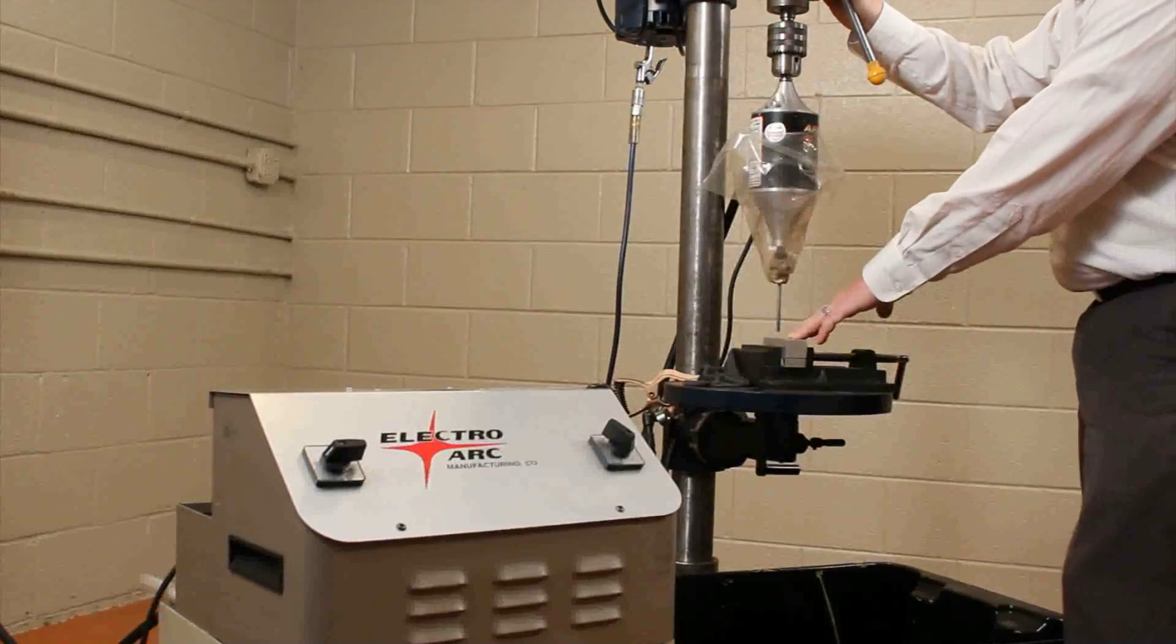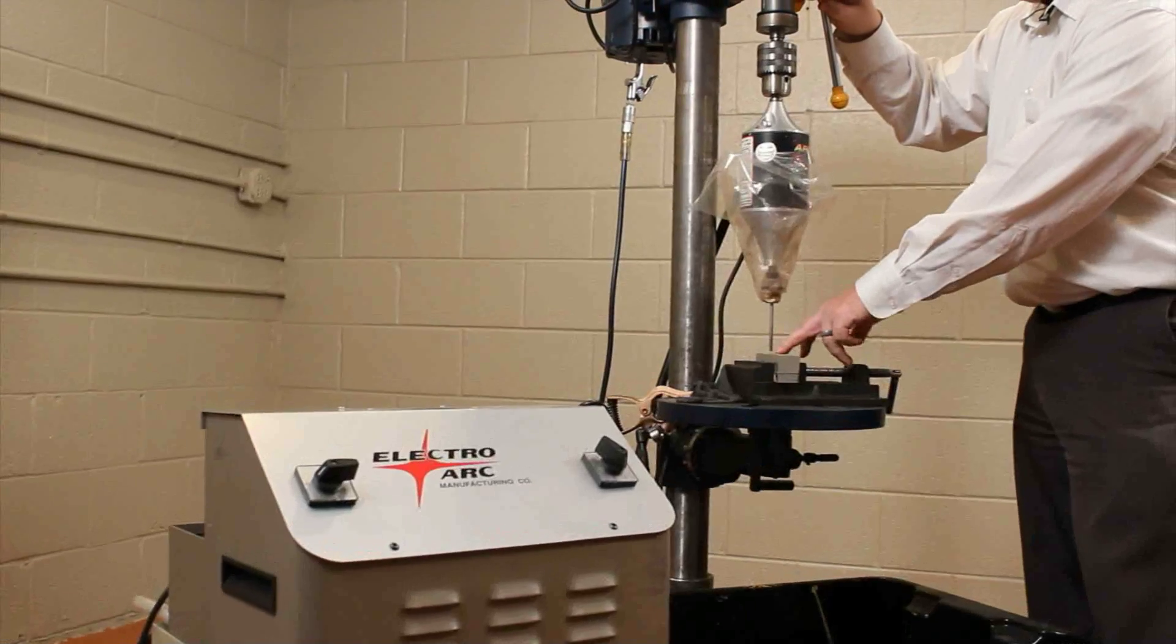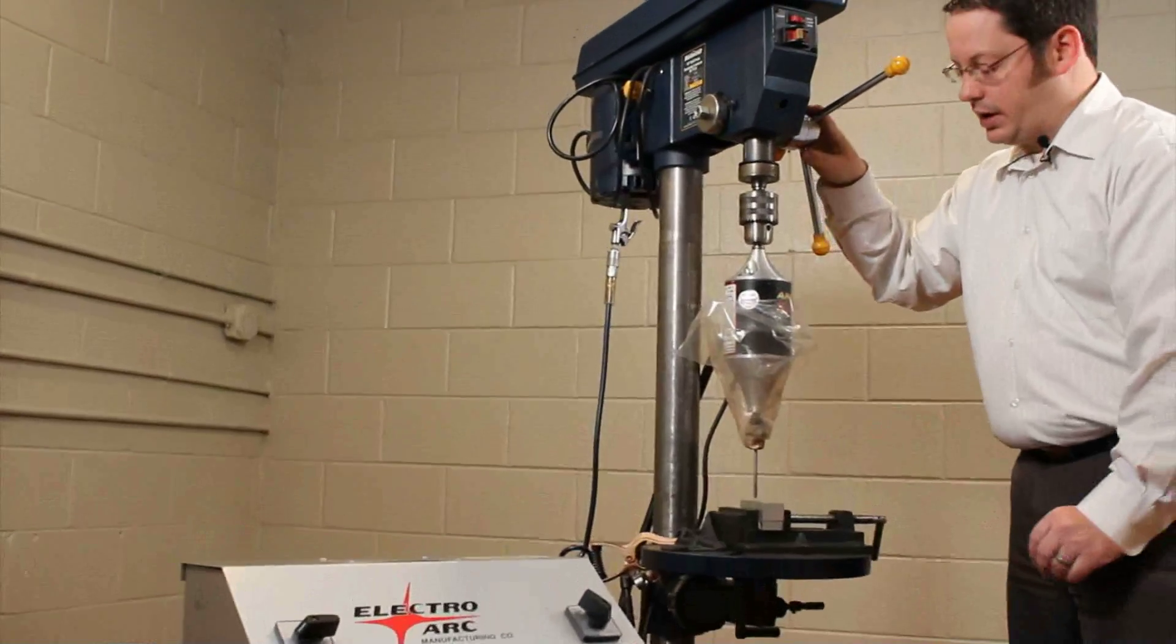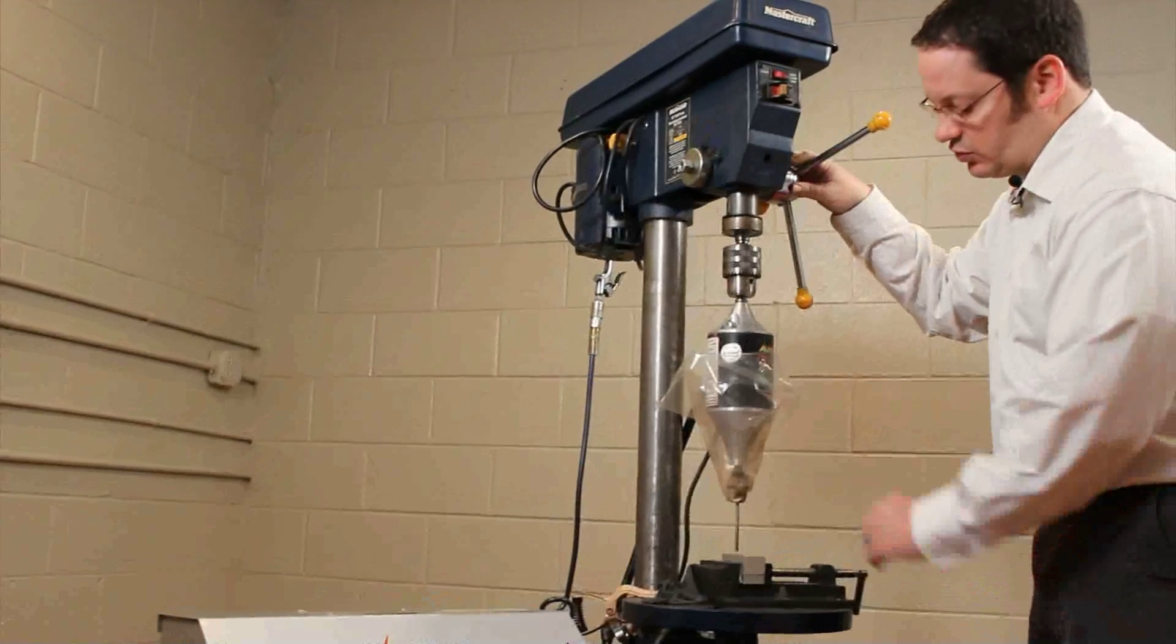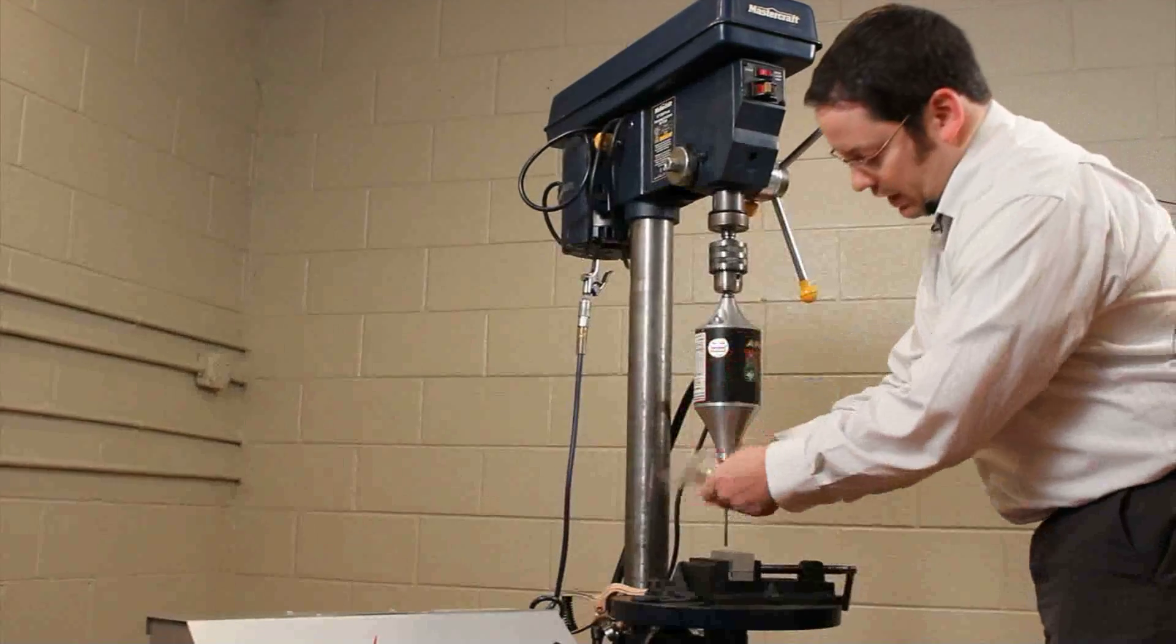As far as our alignment, all you want to do is eyeball this and center your electrode over the broken tooling, in this case a tap, because all we're going to do is take out the core and leave the flutes behind. So you just want to make sure it's centered over that, which it is.